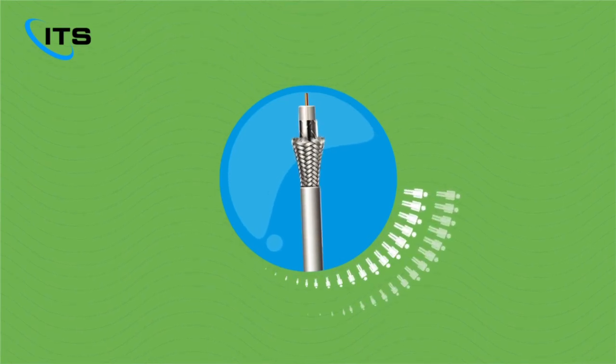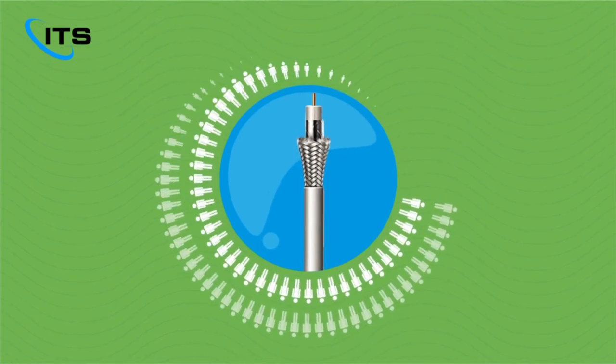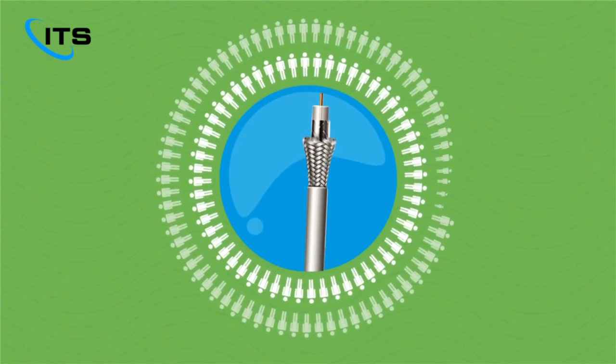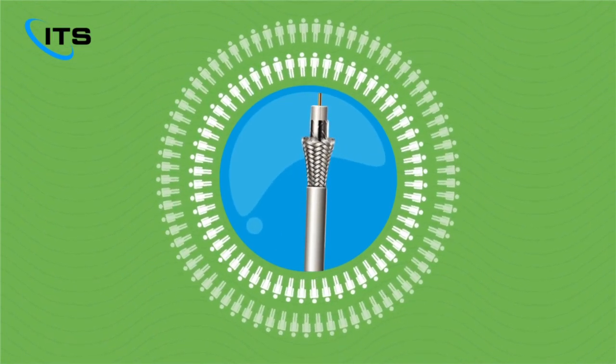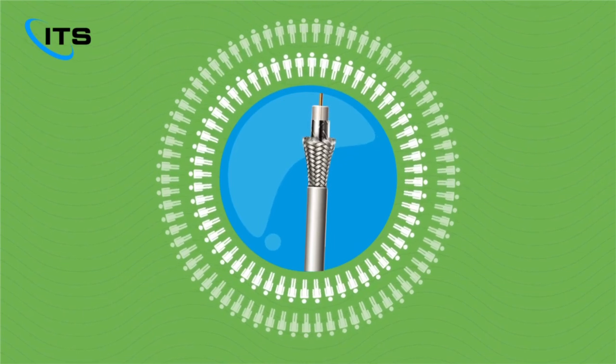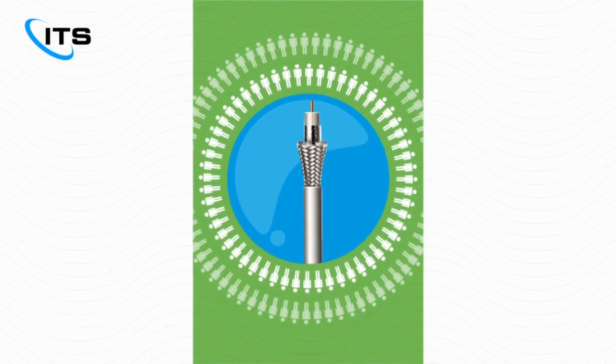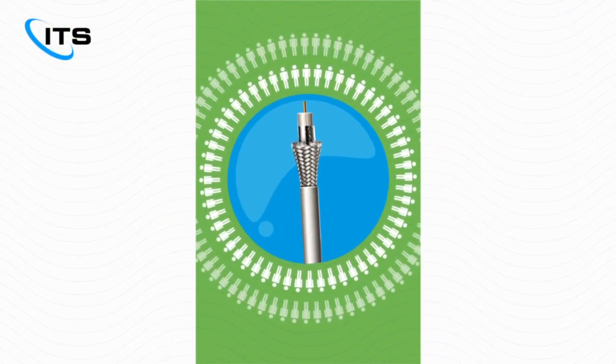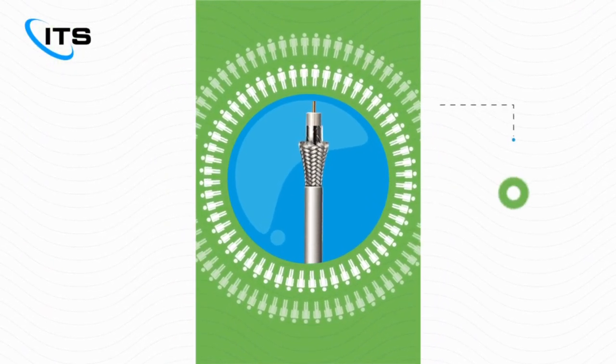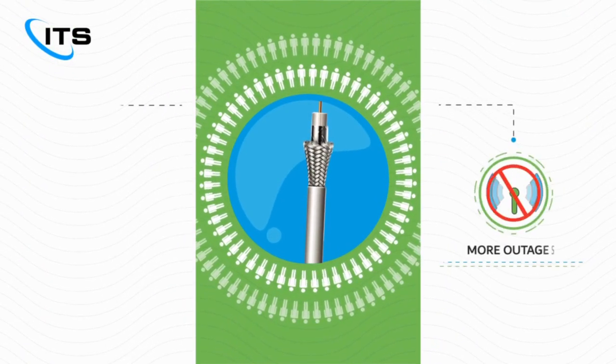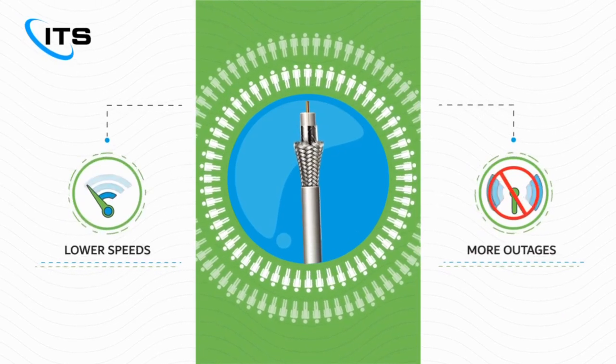The coax infrastructure of today is built without fully factoring in the significant population growth that many cities are experiencing. That puts additional strain on infrastructure, leading to more outages and lower speeds.